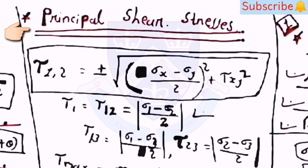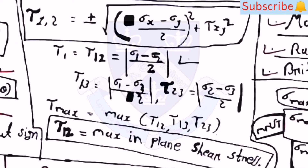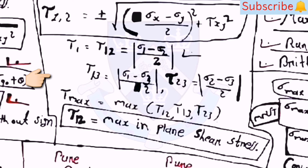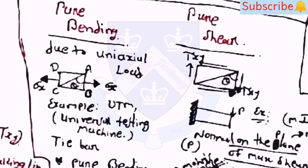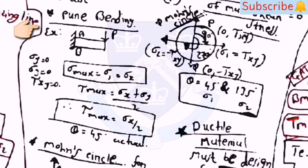For principal shear stresses: tau_1,2 = ±√[(sigma_x − sigma_y)²/4 + tau_xy²]. Then tau_12 = (sigma_1 − sigma_2)/2, tau_13 = (sigma_1 − sigma_3)/2, tau_23 = (sigma_2 − sigma_3)/2. Do not consider signs. tau_max = maximum of tau_12, tau_13, and tau_23. Remember that tau_12 is always the maximum in-plane shear stress. For pure bending: sigma_max = sigma_1 = sigma_x, tau_max = (sigma_x + sigma_y)/2 = sigma_x/2, and theta = 45°.